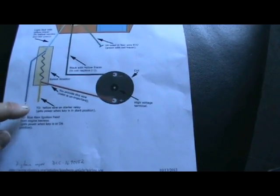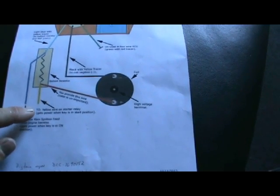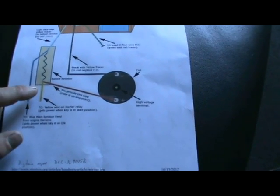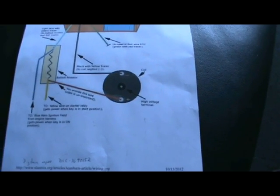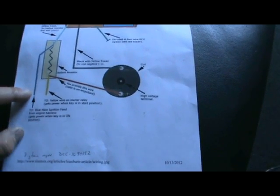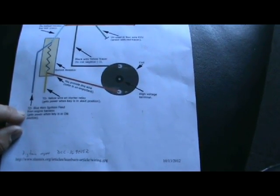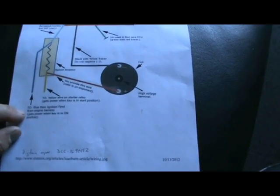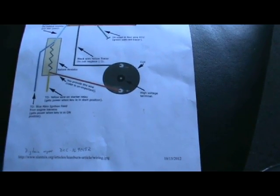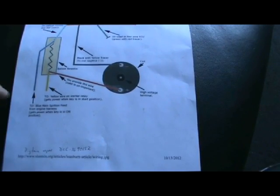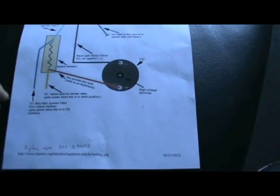And then the yellow wire on the starter relay gets power when the key is in start. That will go to the other side. This blue wire here should be original in your vehicle. Typically it is a blue wire. It is the main ignition feed for the engine harness to power the key on position.